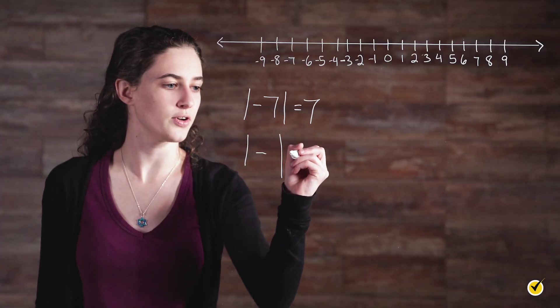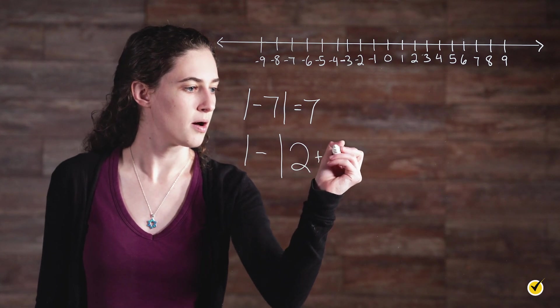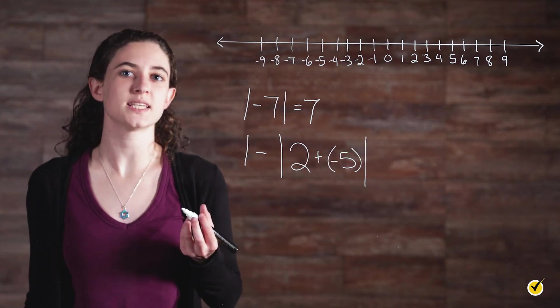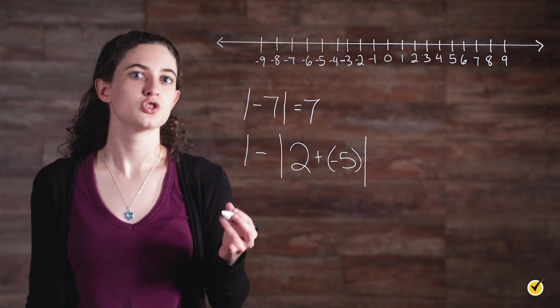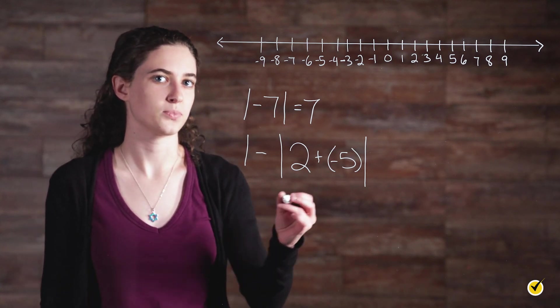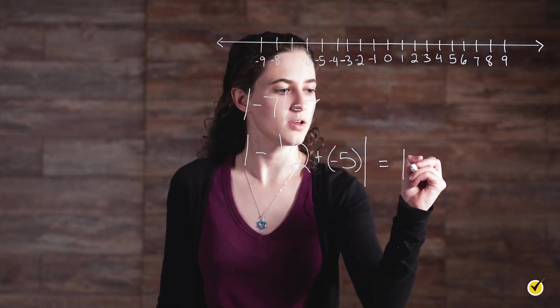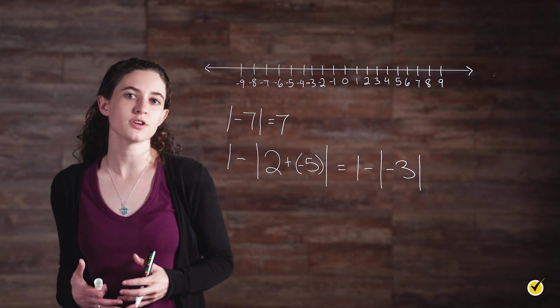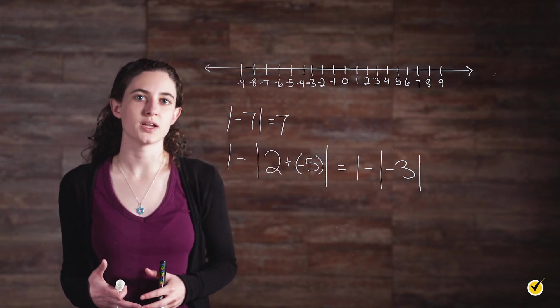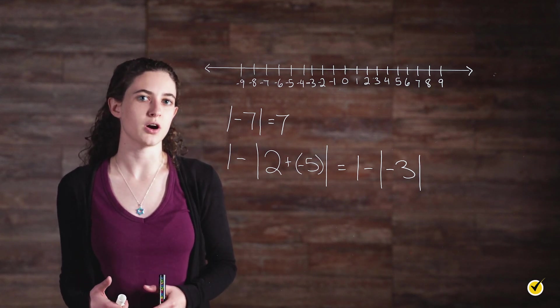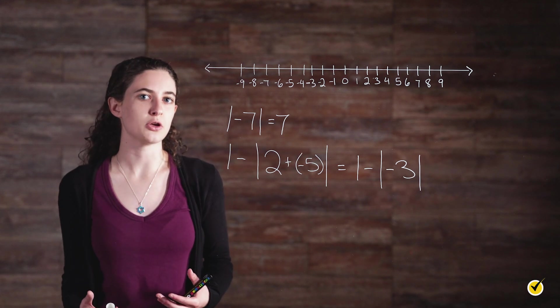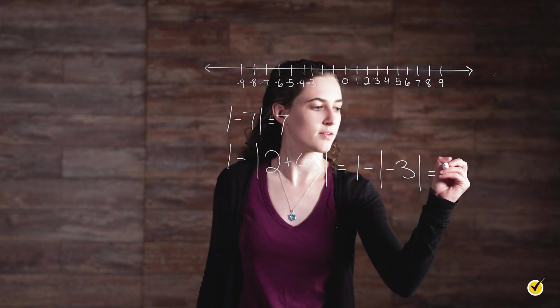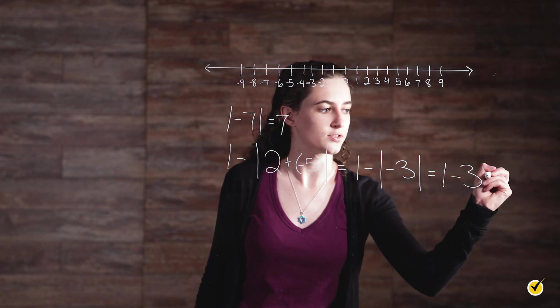One minus the absolute value of two plus negative five. We evaluate what's inside the brackets first. So two plus negative five equals negative three, which gives us one minus the absolute value of negative three. Using our number line, we can see that negative three is three units away from zero, which means that the absolute value of negative three is three. This gives us one minus three, which equals negative two.